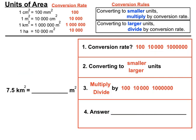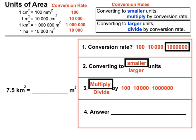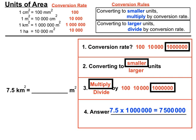Now we're using kilometres squared and metres squared for the first time, with that huge conversion rate of a million. Going from kilometres squared to metres squared means moving to a smaller unit, so we multiply by a million — moving the decimal point six places to the right. The result is seven and a half million square metres.